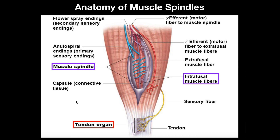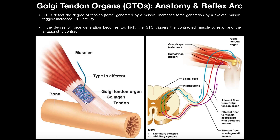Before we go into muscle spindles, I want to briefly review what we talked about in the previous video, which was the Golgi tendon organ. What the Golgi tendon organs, which are located in the tendon, sense is the amount of force that's generated by muscles. If there's only a little bit of force generated, then the Golgi tendon organs are only going to fire a little bit. If the muscle force is enormous, then these Golgi tendon organs are going to be firing at a really high rate. This is a way for the central nervous system to understand and detect the force generated by muscles at any given time all over the body.